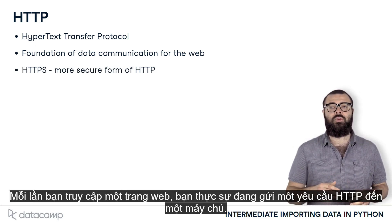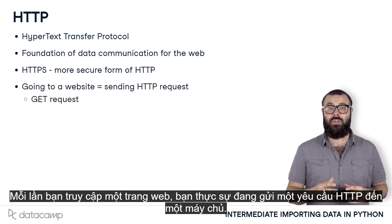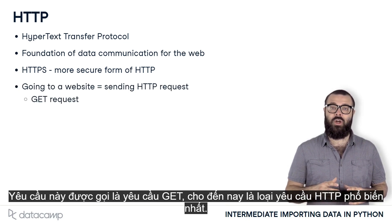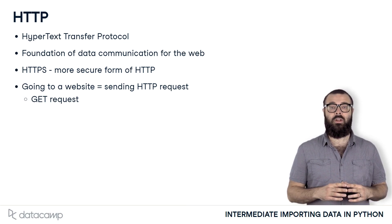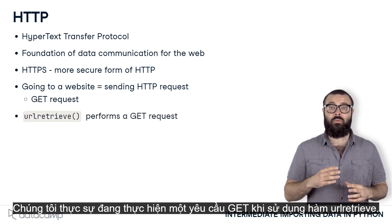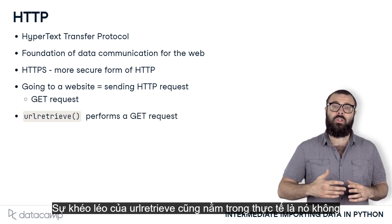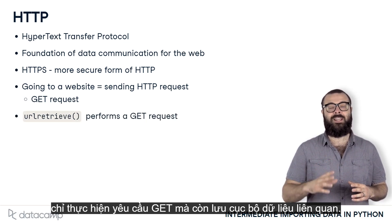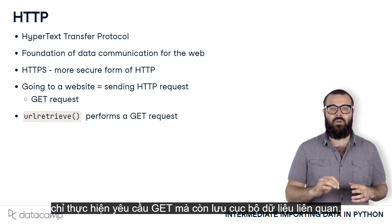Each time you go to a website, you are actually sending an HTTP request to a server. This request is known as a GET request, by far the most common type of HTTP request. We are actually performing a GET request when using the function URL retrieve. The ingenuity of URL retrieve also lies in the fact that it not only makes a GET request, but also saves the relevant data locally.